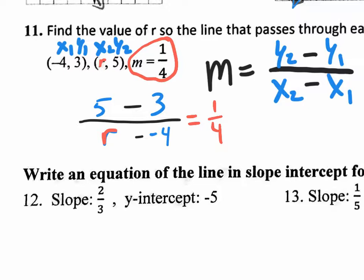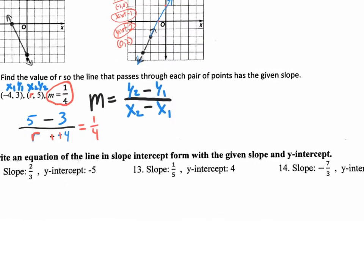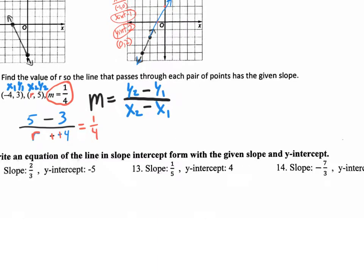So what we have here is an equation. Before we start solving this equation, let's start simplifying. The minus minus changes to plus. So we end up with r plus 4 on the bottom. Let me rewrite this complicated-looking equation by simplifying. So 5 take away 3 is 2. I have a new equation that says 2 over r plus 4 equals 1 over 4.